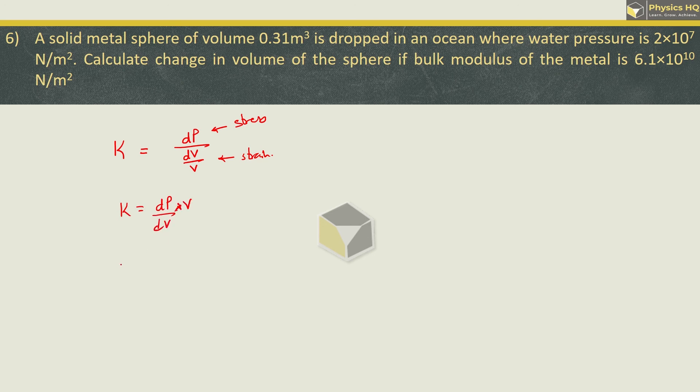So this will be K equal to dp by dv into V. We are supposed to find the change in volume dv. So this becomes dp by K into V. Let us put all the values. Change in pressure is the water pressure exerted on it. Volume of the metal sphere is given as 0.31 divided by K value is 6.1 into 10 raised to 10. So this will be 0.62 divided by 6.1, 10 raised to 10 going up becomes minus 10.